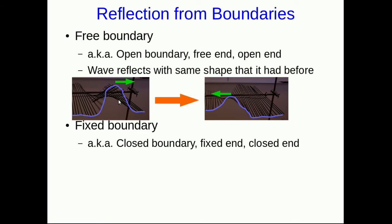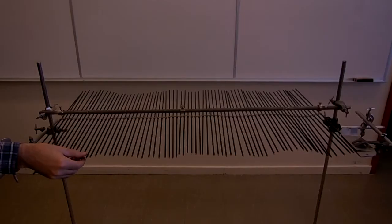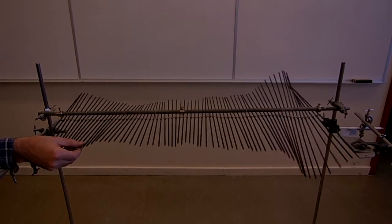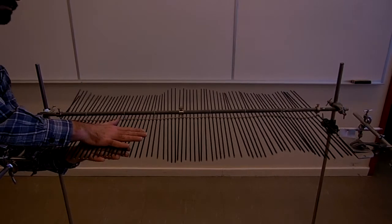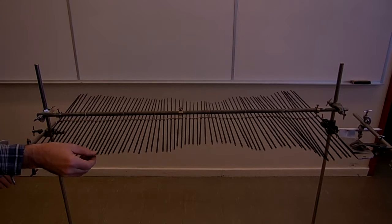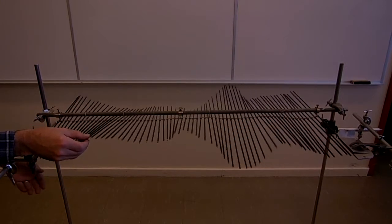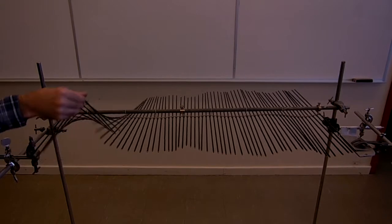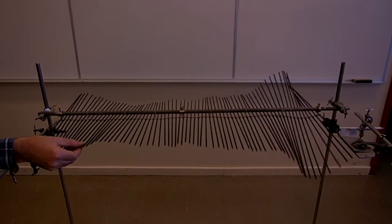Now let's talk about the opposite extreme, which is a fixed boundary, also called a closed boundary, or sometimes just an end. This is the case where the end of the system is somehow held in place — the medium there cannot move. Here's the wave machine again, but now I have clamped the ends so that the rods at the very ends can't move. These are now what we call fixed ends, or closed boundaries.